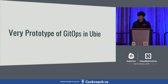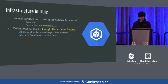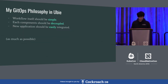We created a very simple prototype of a GitOps pipeline in our production. In our service, we have several services like front end and several microservices for back end. We are using Google Kubernetes Engine for our service, and we just migrated last month from Heroku. My philosophy for this workflow and pipeline is: workflow should be simple enough, and each component should be decoupled.